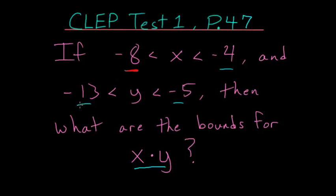So negative 8 and negative 13 multiplied together will be the highest value for x times y.